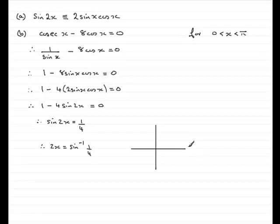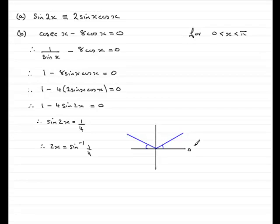If you're unfamiliar with the quadrant method, there's a link at the bottom of this video on my website. For the quadrant method, remember this is 0 radians — we're dealing with radians here. We turn in an anticlockwise direction and sine is positive. We've got a positive value here — 1/4 — so sine is positive in the first quadrant and the second quadrant. Draw two lines equally inclined to the horizontal, marking that those two angles are exactly the same. We're interested in 2x, not the angle x at the moment.